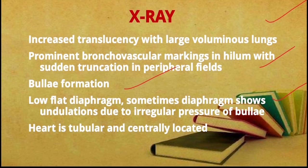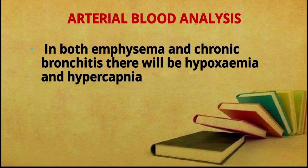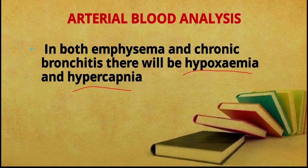In arterial blood gas analysis, both emphysema and chronic bronchitis show hypoxemia and hypercapnia due to reduced oxygen levels. You can add hypoxemia and hypercapnia to the clinical signs, and add the barrel-shaped chest to the chest X-ray findings.